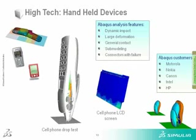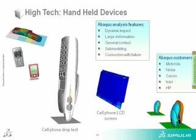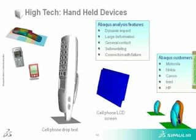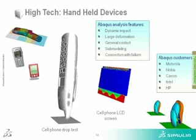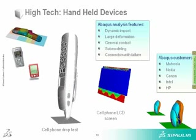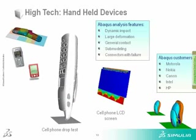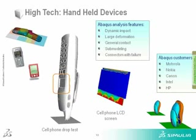The Abaqus analysis features here require dynamic impact and very large deformation — a common theme when going to Abaqus FEA. That dynamic impact together with the extent of deformation leads to general contact requirements. We don't know where the assembly is going to experience contact, but it's probably going to be just about everywhere. That's where Abaqus general contact comes in — you basically just say 'contact yes,' turn it on, and let the FEA code determine where contact will occur.